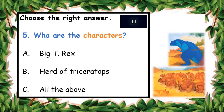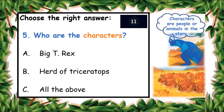The next question: who are the characters? Characters — what does that mean? Characters are people or animals in the story. So who are the characters? A: Big T-Rex, B: Herd of Triceratops, C: All of the above. Yes, all of the above — we have Big T-Rex and the herd of Triceratops!